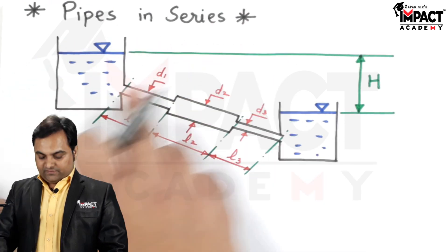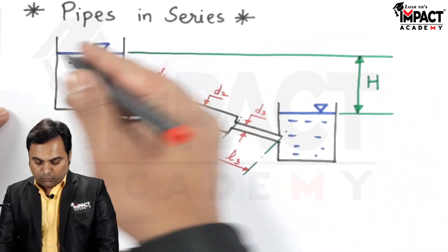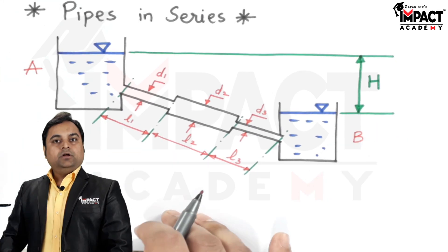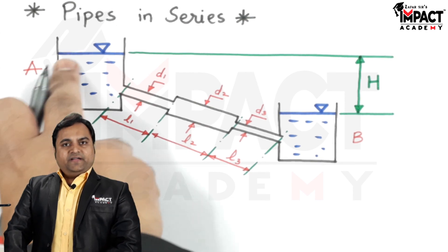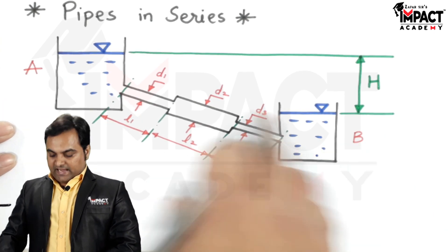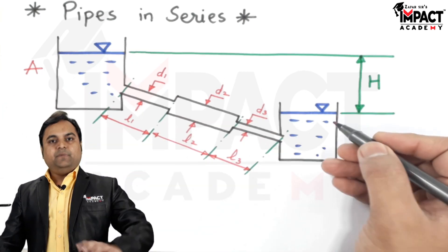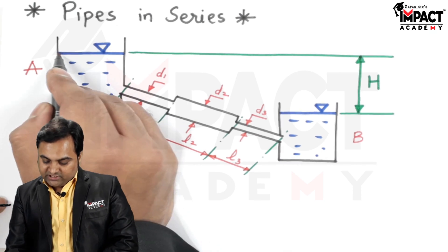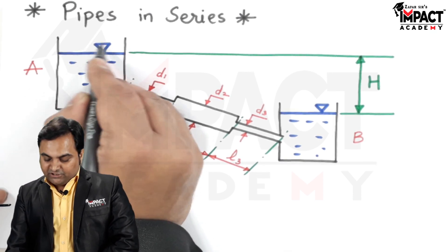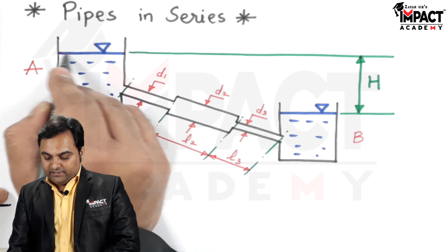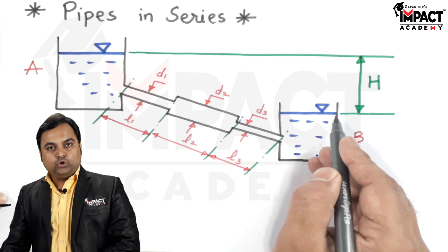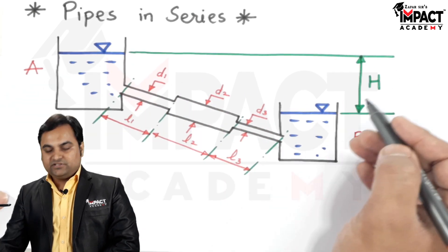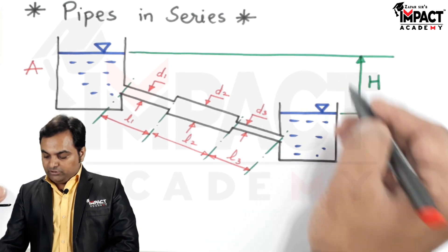To explain the pipes in series, I have drawn two tanks — one is called Tank A and the other is Tank B. Tank A is at a higher level and Tank B is at a lower level. I am assuming the liquid to be water, though it can be any other liquid. Both are open tanks subjected to atmospheric pressure. The difference in water surface levels between the two tanks is denoted by capital H, also called the level difference.